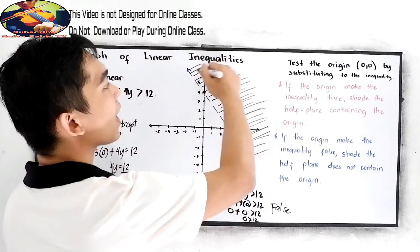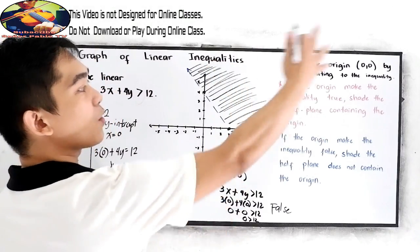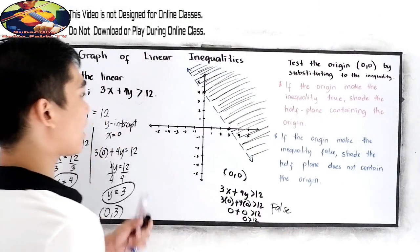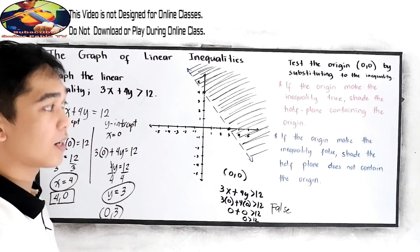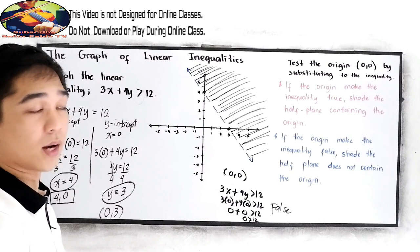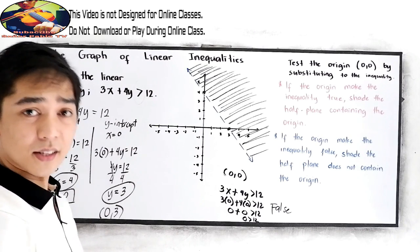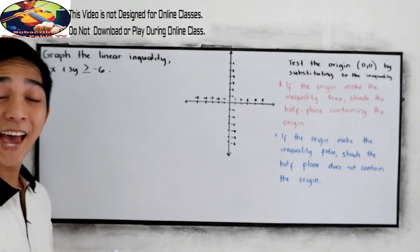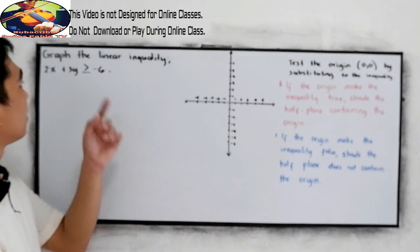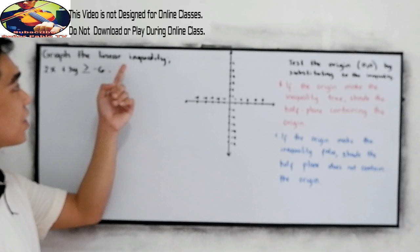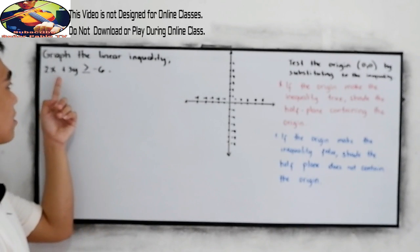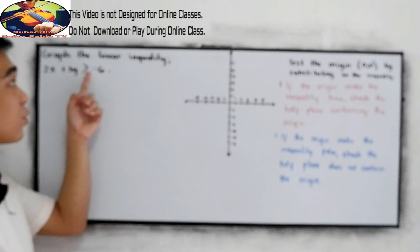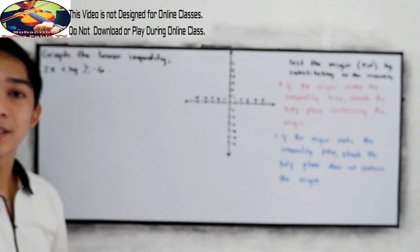This will be the graph of the inequality. All the numbers here satisfy the linear inequality. Let's have another example. Graph the linear inequality 2x plus 3y is greater than or equal to negative 6.